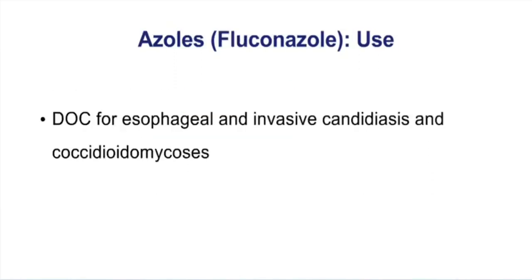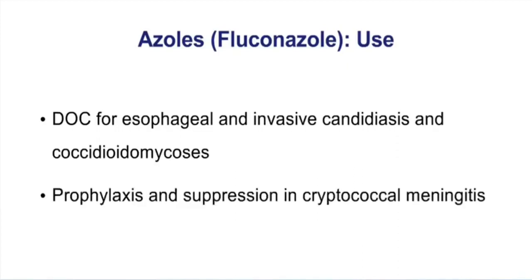Fluconazole is the favorite azole antifungal — very popular today. It's the drug of choice for esophageal and invasive candidiasis and for coccidiomycosis. We also see this drug used for prophylaxis and suppression of cryptococcal meningitis. For fungal meningitis, you can use Amphotericin B and flucytosine initially and then switch to fluconazole.